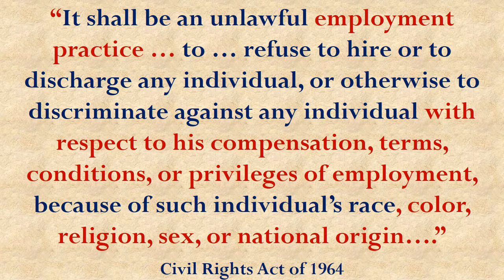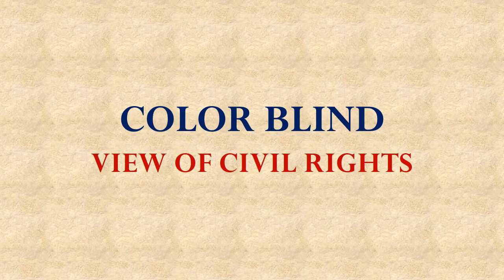That point of view was enshrined in law in the Civil Rights Act of 1964. The Civil Rights Act had a number of provisions designed to eliminate discrimination. For example, it says it's unlawful to refuse to hire or to fire someone, or otherwise discriminate against them, because of their race. If you can't hire or fire someone because of their race, that means not only can you not fire them because they're black, but you also can't hire them because they're black. This seems to say you can't consider race either way — for negative or for positive. This is a colorblind view of civil rights seen in the words of Martin Luther King and in the language of the Civil Rights Act of 1964.